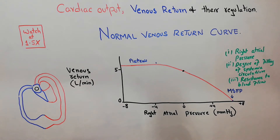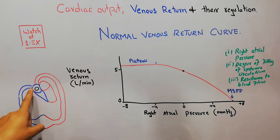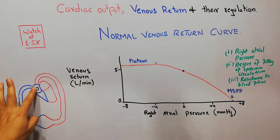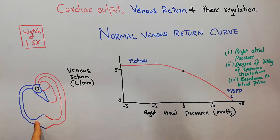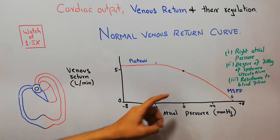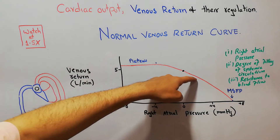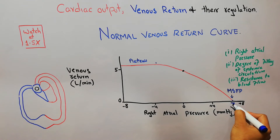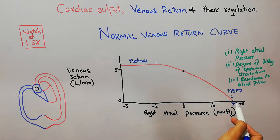Now, what happens if the right atrial pressure increases or decreases? If the right atrial pressure starts increasing, it becomes very difficult for blood in the systemic circulation to return to the heart. So as the pressure in the right atrium increases, the venous return starts decreasing. A point is reached at 7 millimeters of mercury where there is almost no venous return — the venous return becomes zero.